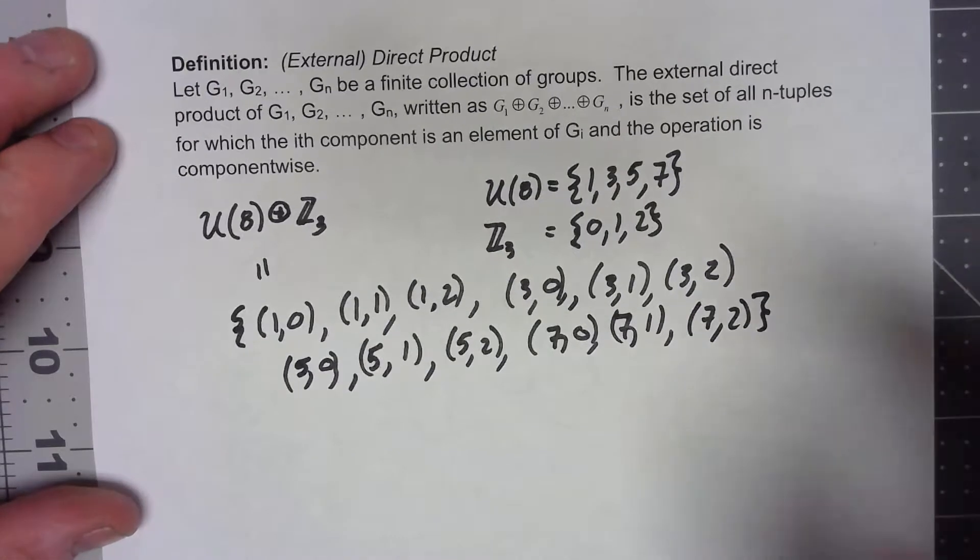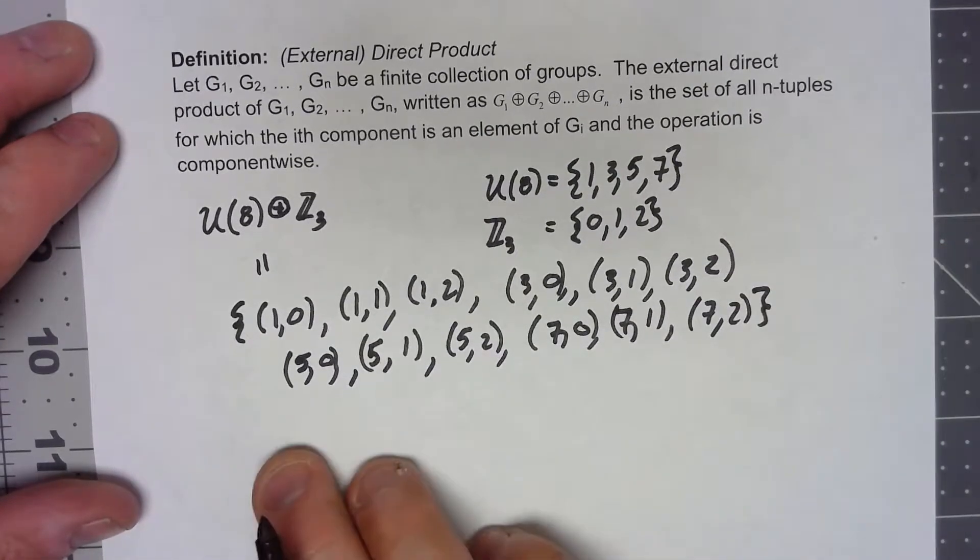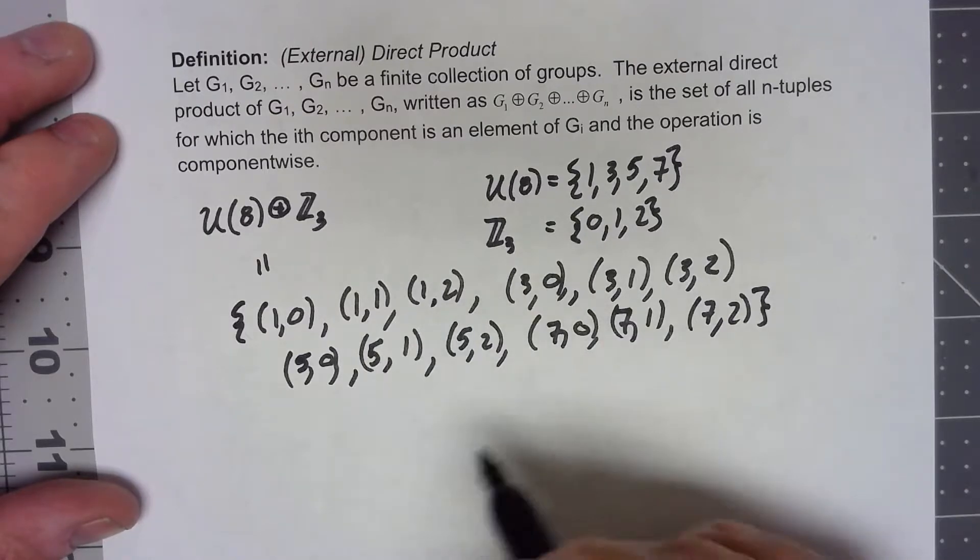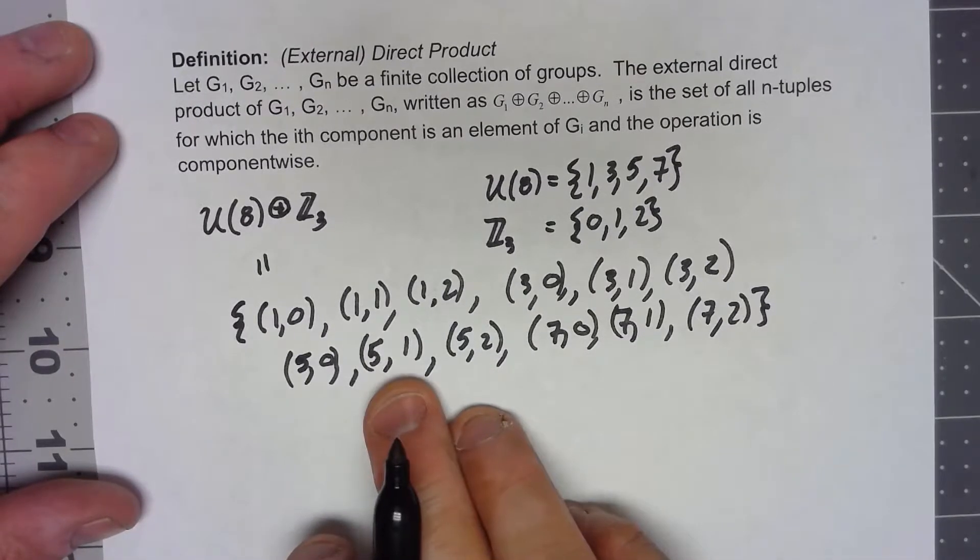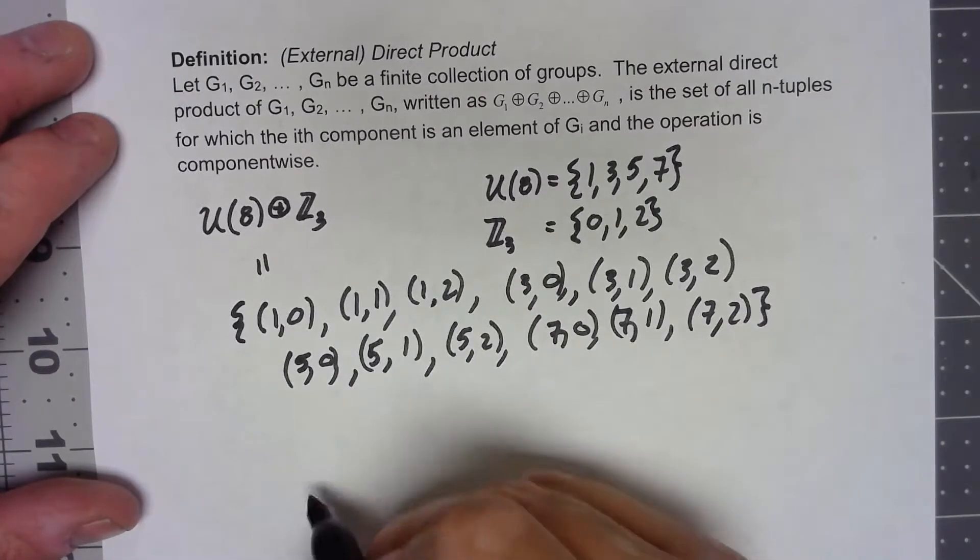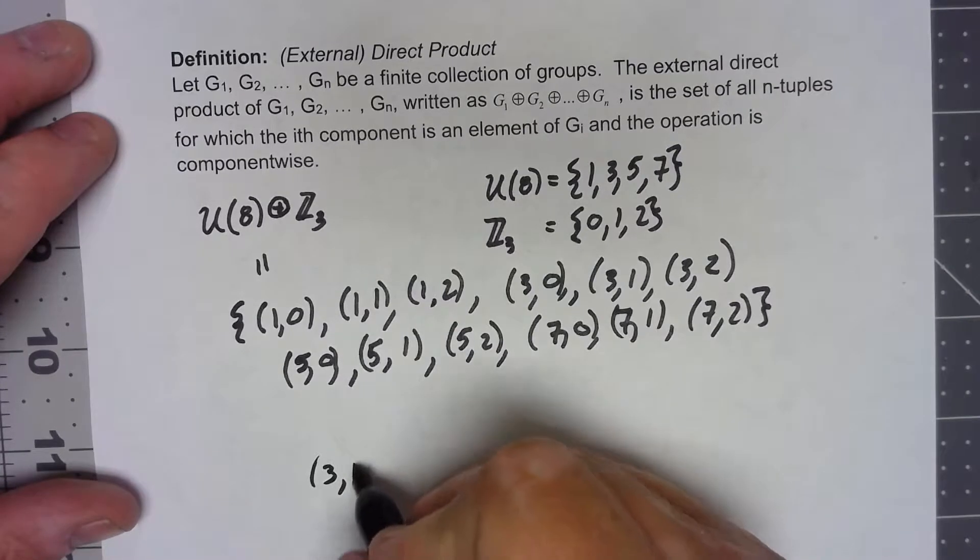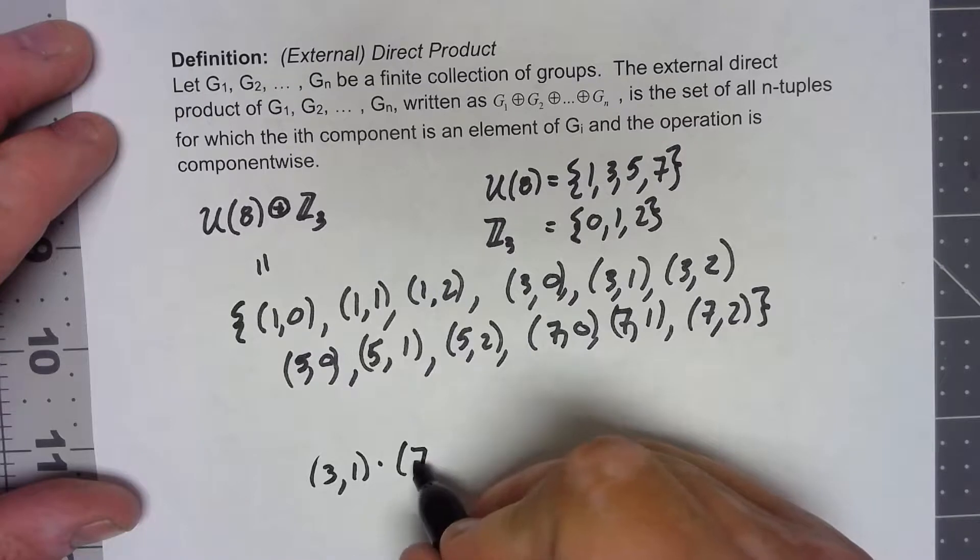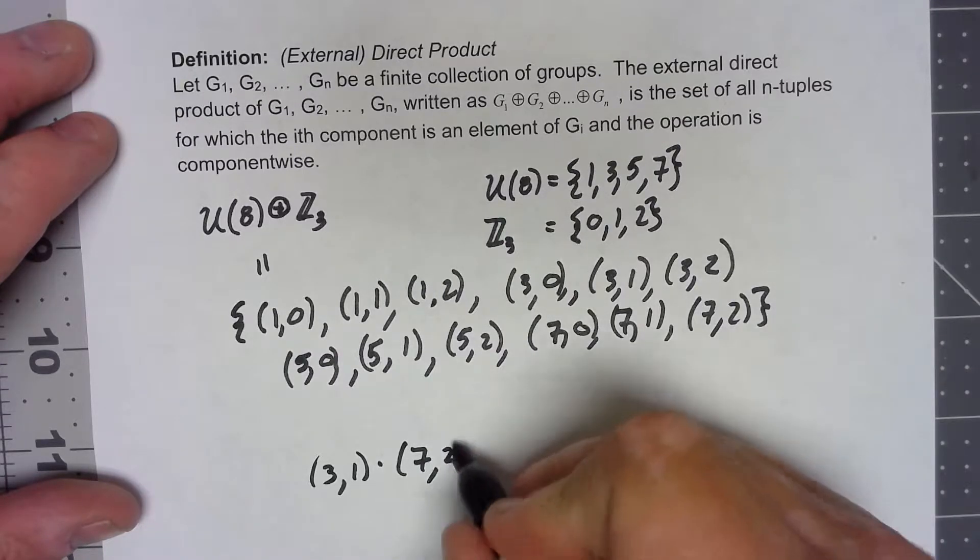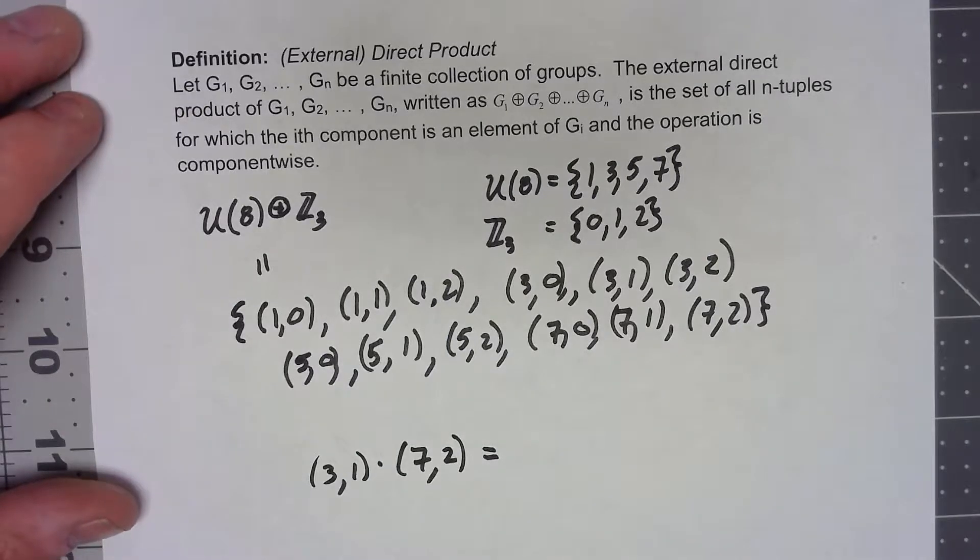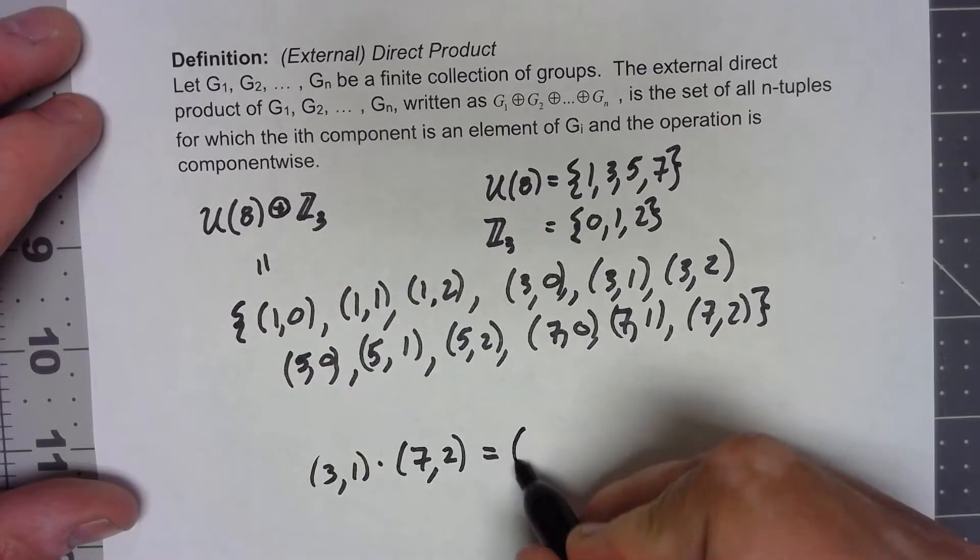And then for a group operation, when I try and do two elements from this group combined together, we're going to just do the operations one at a time. So let's do something like (3,1) times (7,2).